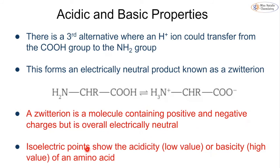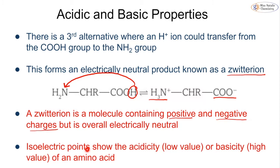There is actually a third alternative: the hydrogen ion from the COOH group can transfer over to the NH2 group. So rather than reacting with water and forming a hydroxonium, it reacts with itself. This hydrogen transfers over and we form a positive end and a negative end — we call this a zwitterion. A zwitterion is a molecule that contains a positive and a negative charge in the same molecule but is overall electrically neutral. There is one positive charge and one negative charge that cancel out.